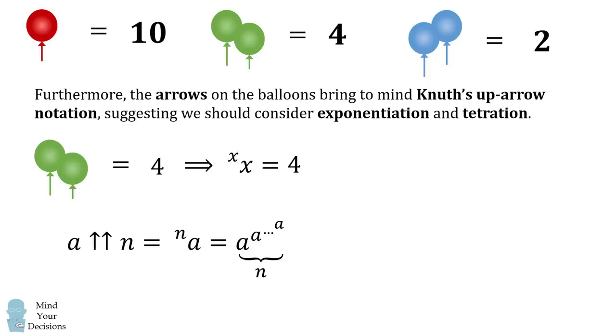Well, A up arrow up arrow n is equal to A left superscript of n, which is equal to a power tower where we have A raised to the power of A raised to the power of A, a total of n minus 1 times. This translates into X raised to the power of X raised to the power of X, where we have a power tower of X terms.